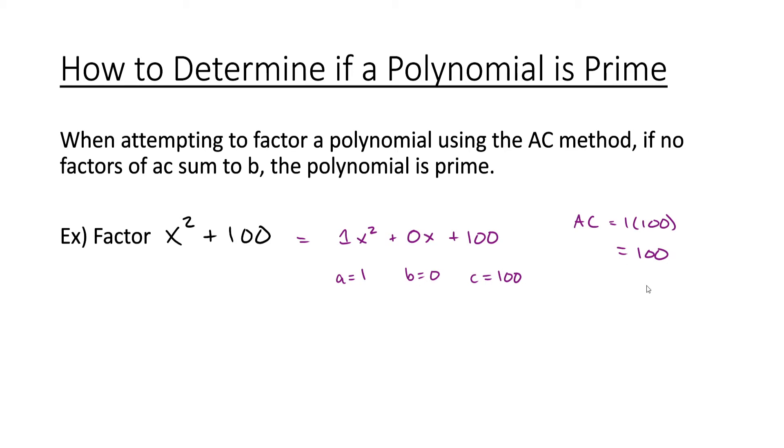Now we would want to find two factors of positive 100 that add to 0. Let's start writing out some factors of 100. 2 and 50. We have 10 and 10. It is a perfect square. But 10 plus 10 is 20. We could do negative 10 and negative 10, but those add to negative 20. There are more factors of 100, but we're not going to find any factors of positive 100 that add to 0. So at this point, we would say this polynomial is prime. We cannot factor this into polynomials of lower degree with rational coefficients.